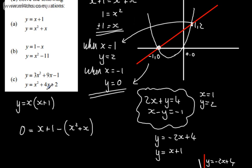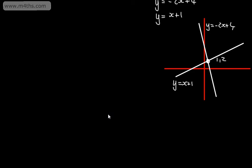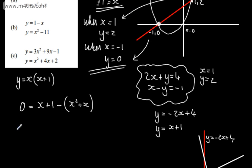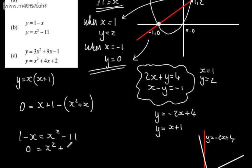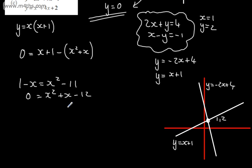Let's have a go at another one. For part b, y equals 1 minus x and y equals x squared minus 11. We can set them equal: 1 minus x equals x squared minus 11. Setting the left-hand side to zero eliminates y, giving us x squared plus x minus 11 minus 1, which simplifies to x squared plus x minus 12 equals 0.